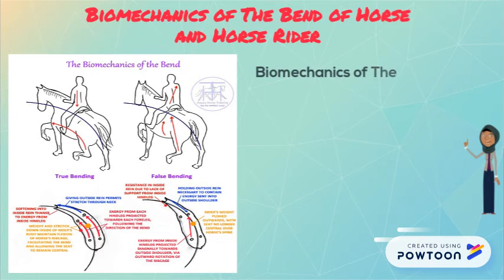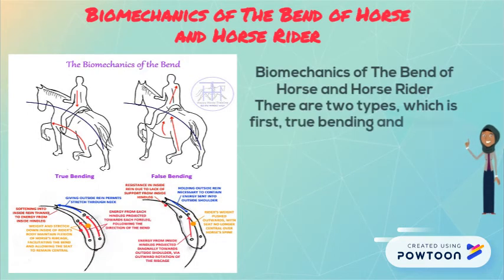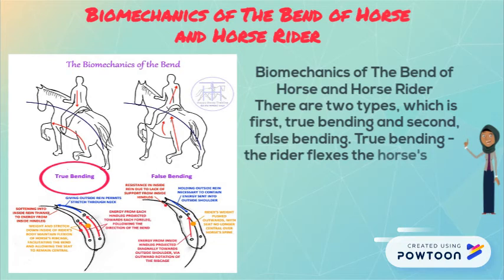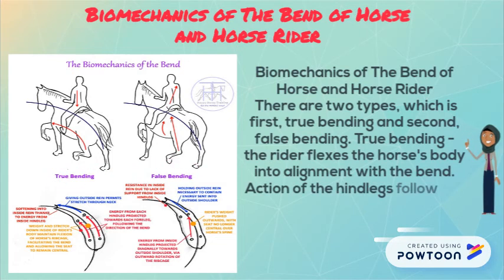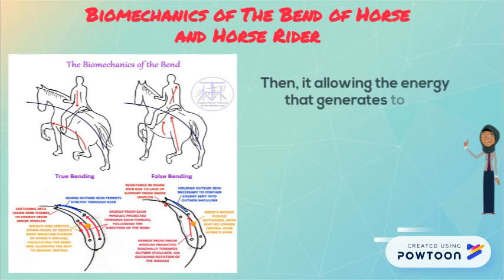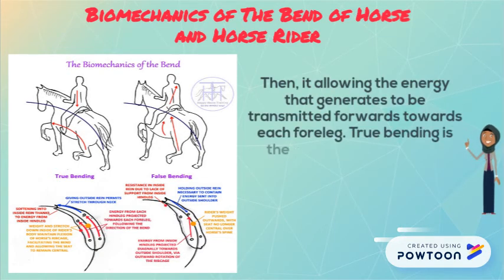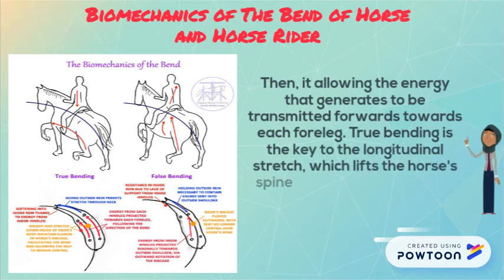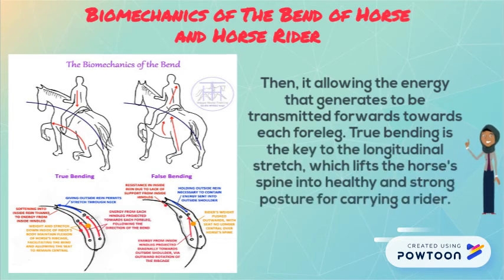Biomechanics of the bend of horse and horse riding. There are two types: first, through bending, and second, false bending. Through bending is when the rider flexes the horse's body into alignment with the bending. The action of the hind legs follows the direction of the horse's body, allowing the energy generated to be transmitted forwards towards each pole. Through bending is the key to the longitudinal stretch, which leads the horse's body into a healthy and strong posture for carrying a rider.